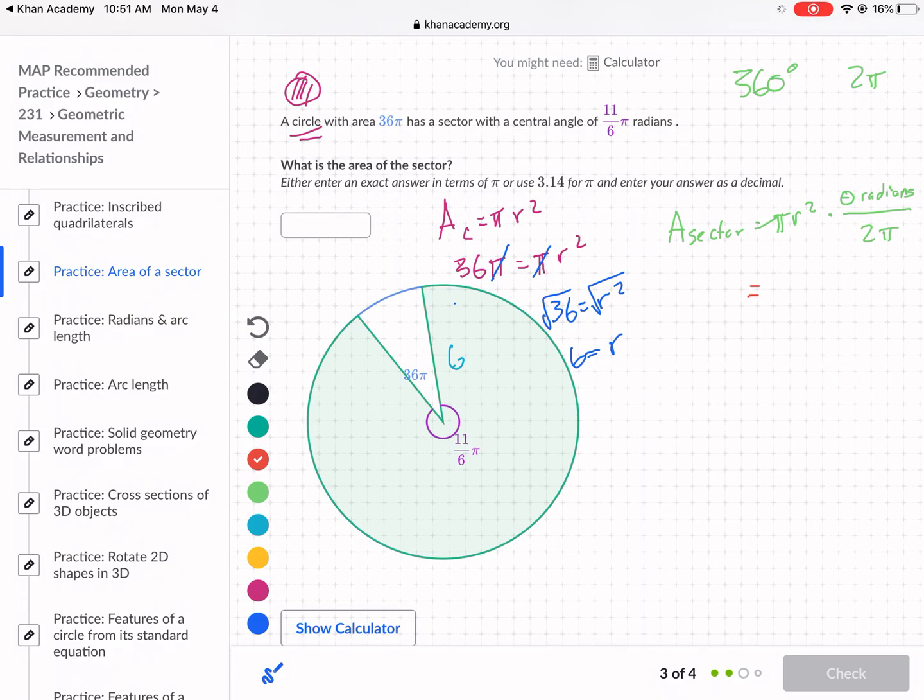Process is essentially the same. So now that we know what r is, we do pi times r squared, we know that's 36, times 11 over 6 pi over 2 pi, and that's going to be the area of our sector. We can cross off those pi's, and then we can change 11 over 6 divided by 2 to times 1/2, and we get 11 over 12. So area of the sector is equal to pi times 36 times 11 over 12. Well we can cancel the 36 and the 12, and we get pi times 3 times 11, and you'll see that we get 33 pi equals our area.